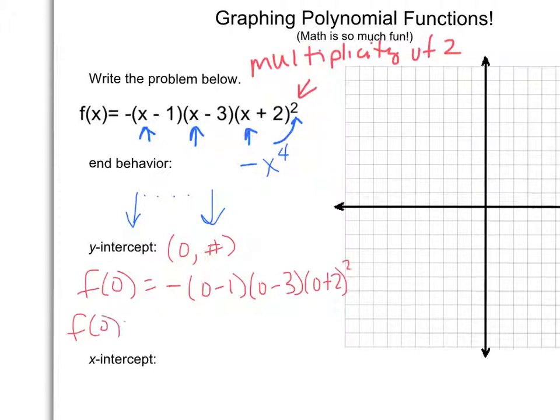So f of 0 in this instance is a negative times negative 1 times negative 3 times 2 squared. So f of 0 is going to be 4 times negative 3, which is negative 12, times negative 1 is positive 12, times another negative is negative 12. That's a lot of positives and negatives you got going on there.